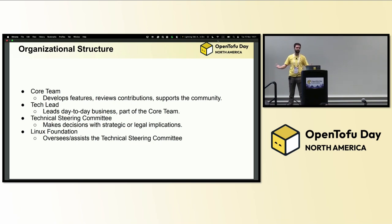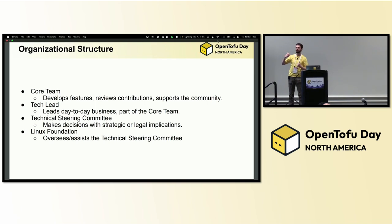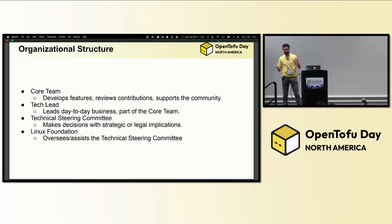So how are we organized? This is how we function today — maybe not the way we function five years from now. The core team develops features, reviews contributions, and supports the community. We are the backbone. We want to get whatever the users are saying, whatever the community is asking for, and make that happen — either developing it ourselves or working with people from the community or companies. It's our job to make that a reality, help them through testing and implementation.